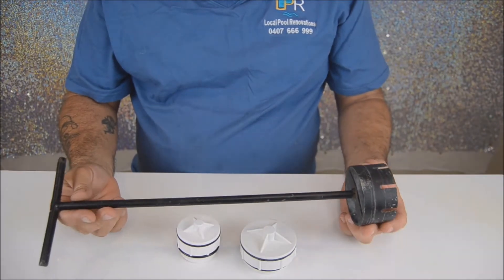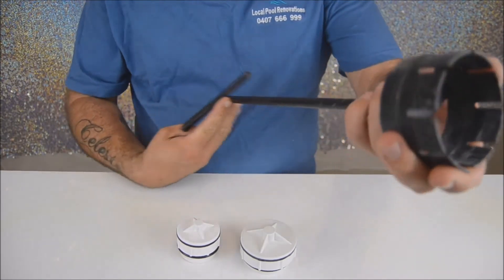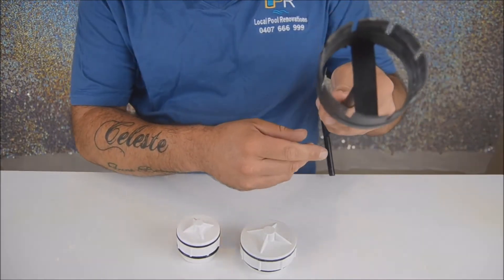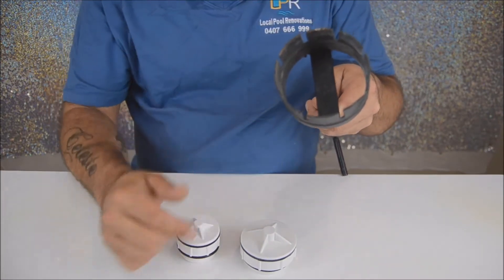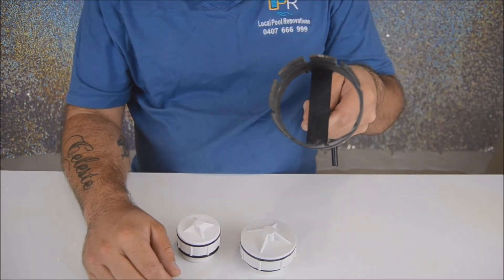For the 40mm hydrostatic valve, you will need a hydrostatic valve removal tool that is 40mm in diameter instead of 50mm in diameter.